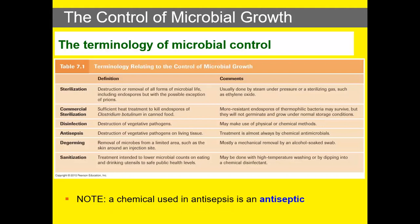Disinfection is the destruction of vegetative pathogens by a chemical — it does not kill endospores, though some disinfectants can. Antisepsis is the destruction of vegetative pathogens on living tissue; the chemical is less harsh and a little less efficient than a disinfectant. Bleach is mostly used as a disinfectant; iodine is an example of an antiseptic. De-germing is the removal of microbes from a limited area, such as when you alcohol the skin before an injection — alcohol decreases bacteria in the area but does not remove all of them. Sanitization is treatment intended to lower microbes to safe public health levels, such as when treating eating utensils or plates in the restaurant industry.